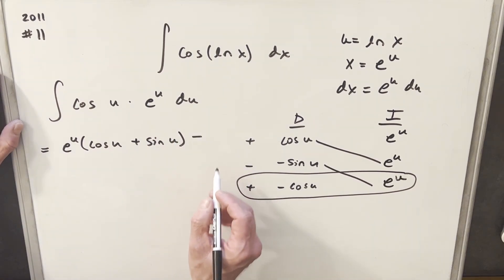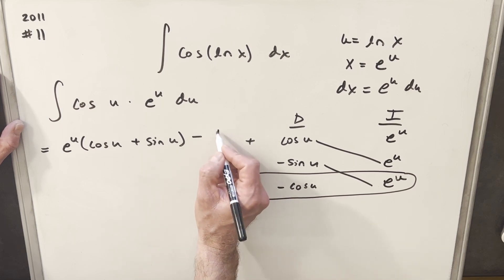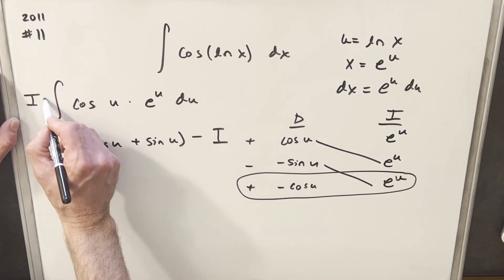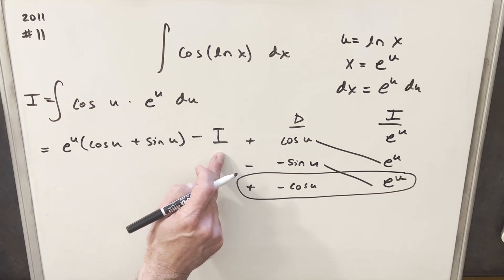And then here we're going to have minus, and instead of writing this integral, I'm just going to call it i. Okay, this will be the same integral as this, i. And I do that because we want to solve for that i.